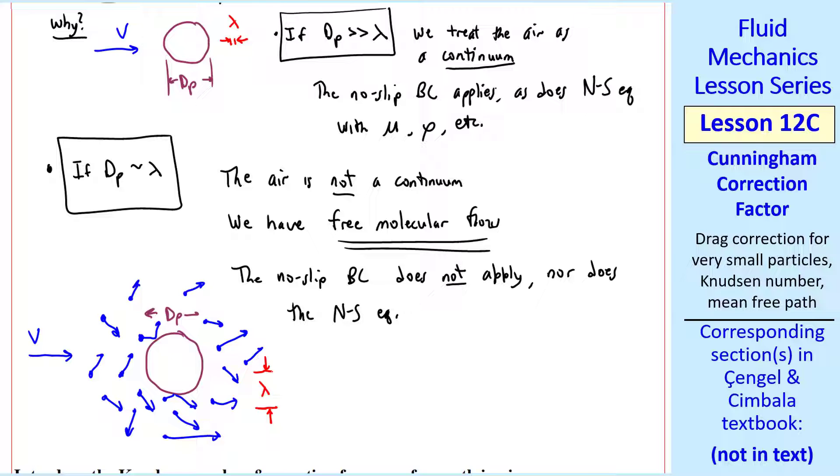Lambda is defined as the average distance between molecules. Unlike this case, where we have friction drag along the walls and pressure drag, the only drag we have here is when an air molecule hits the solid particle, imparting some momentum to it, which translates as a drag.